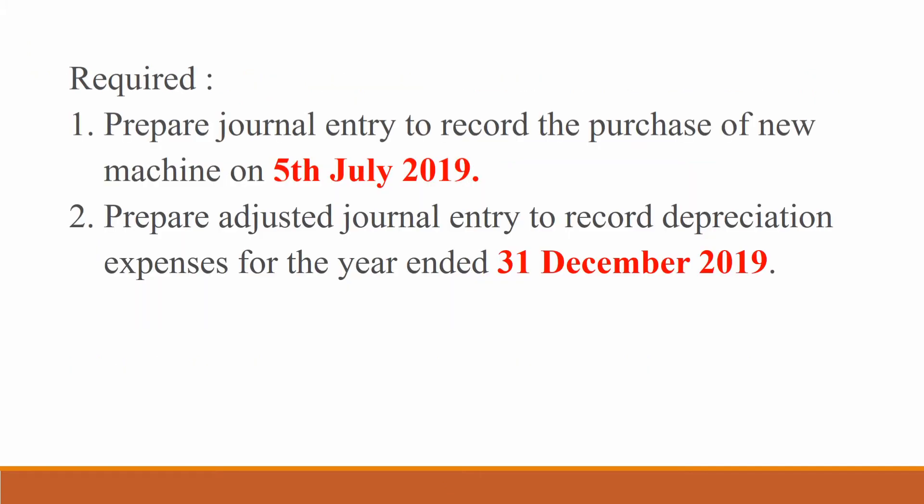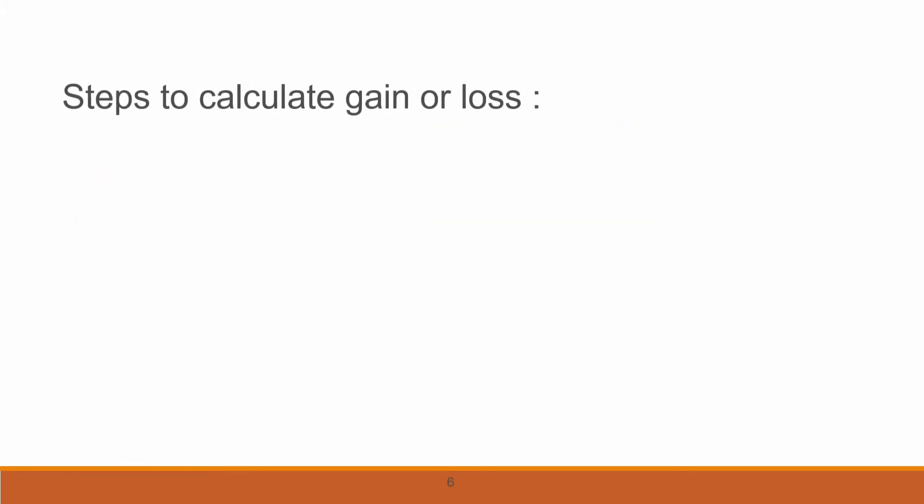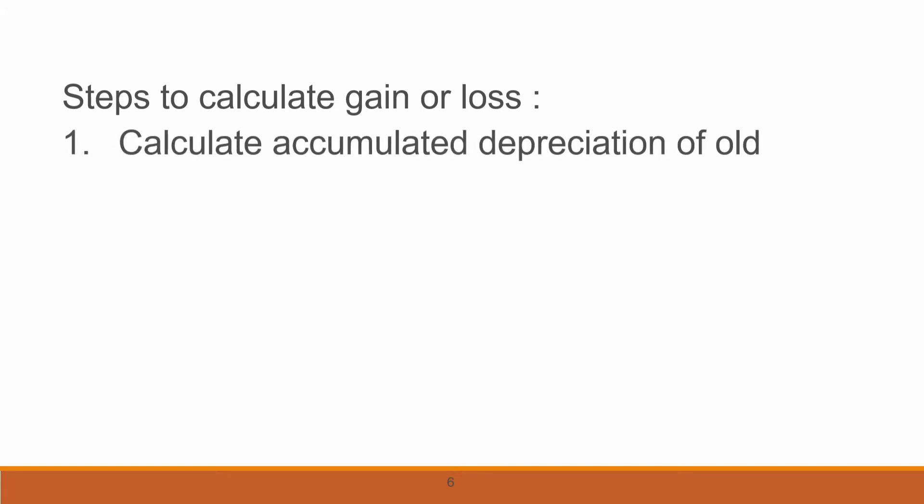You are required to prepare the journal entry to record the purchase of the new machine on the 5th of July 2019. And second, you are required to prepare the adjusted journal entry to record the depreciation expense for the year. Before we prepare the adjusted journal entry, there are a few steps to calculate gain or loss.